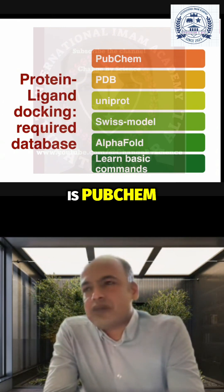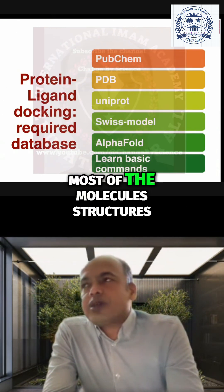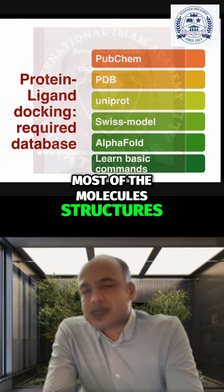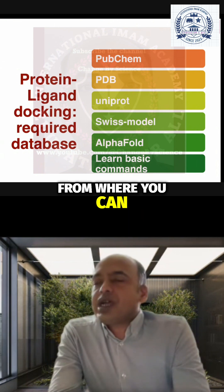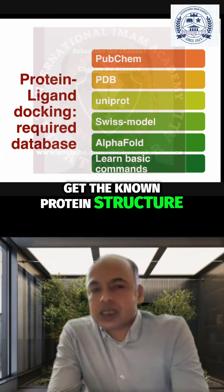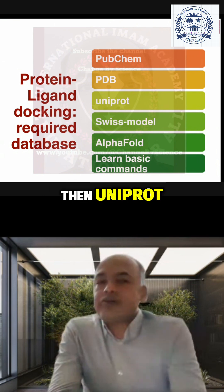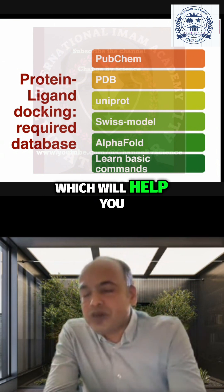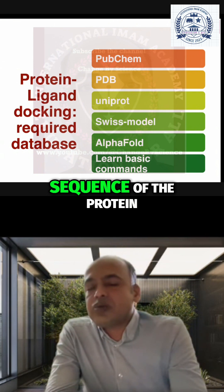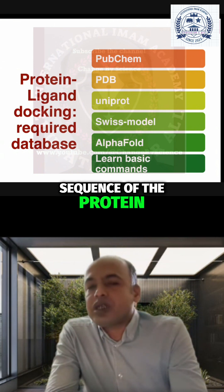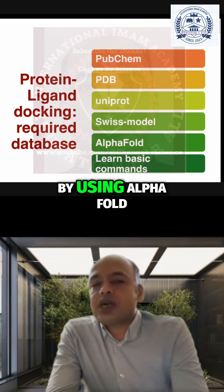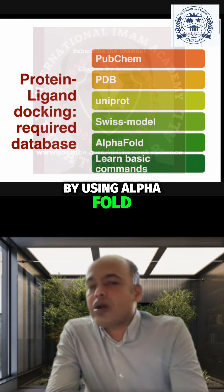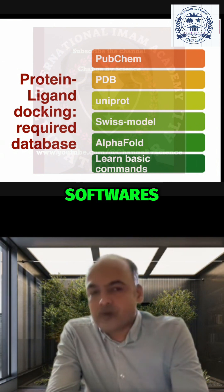For drug design, one key resource is PubChem, where you can get most molecule structures. Then there is the PDB, from where you can get known protein structures. UniProt will help you retrieve the primary sequence of a protein so that you can predict its 3D structure using AlphaFold or other software.